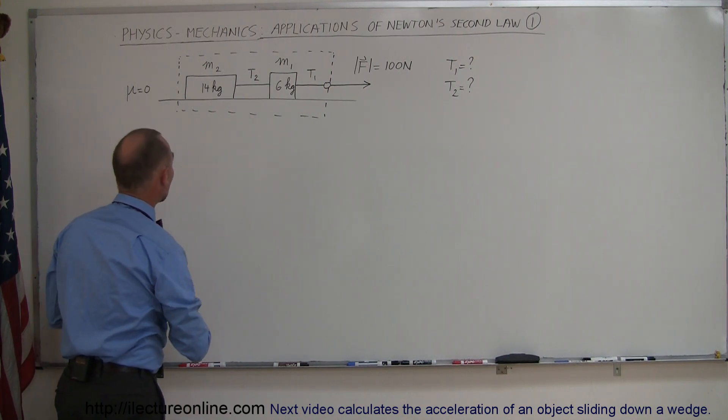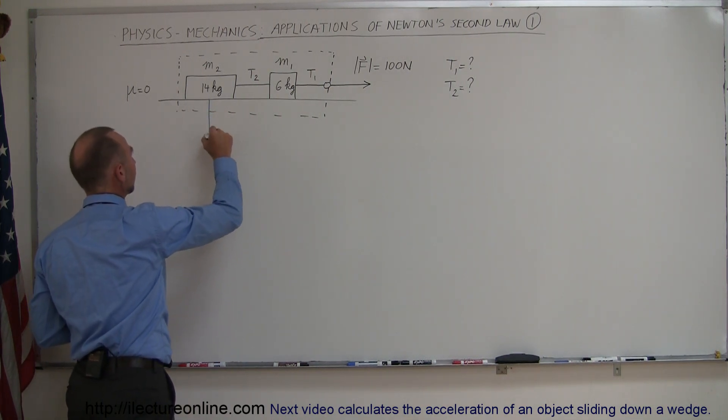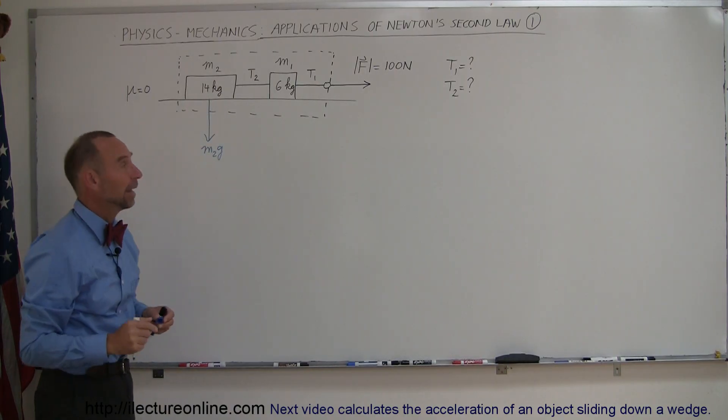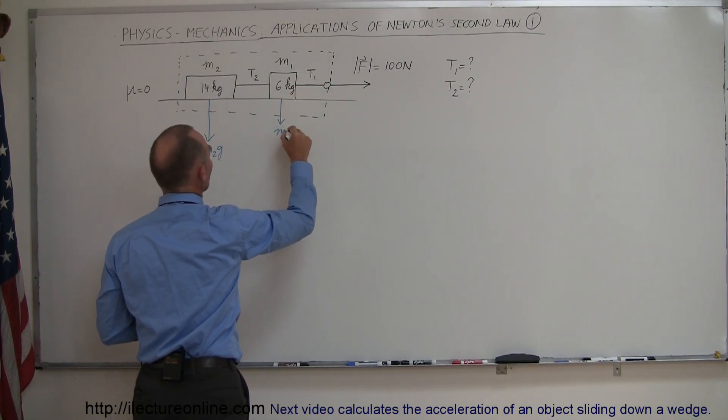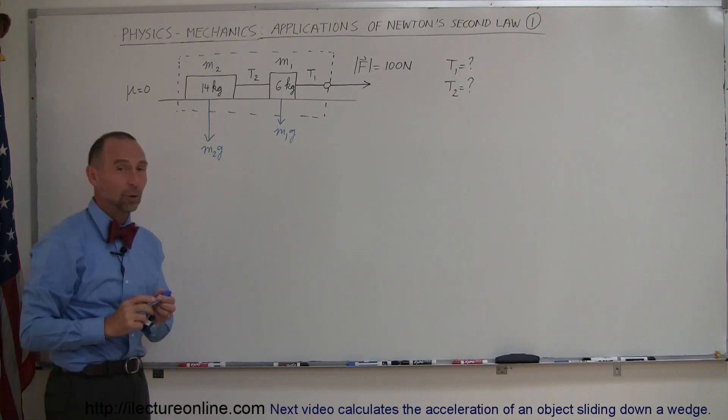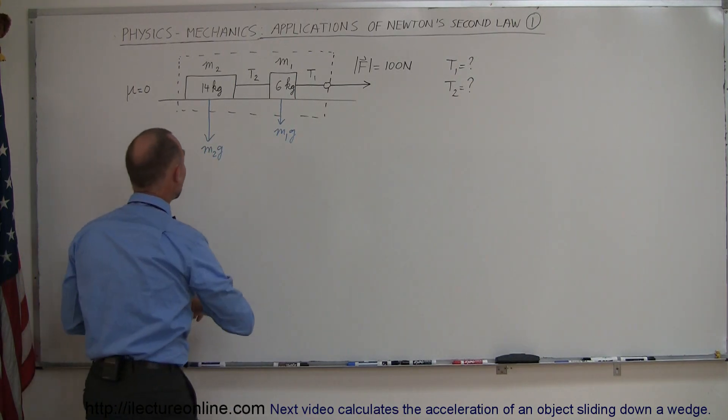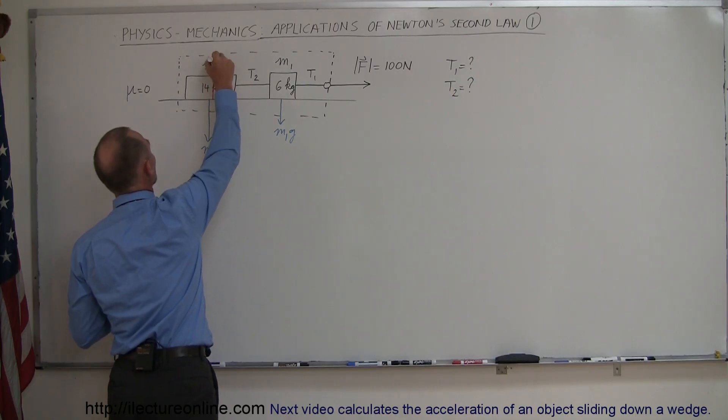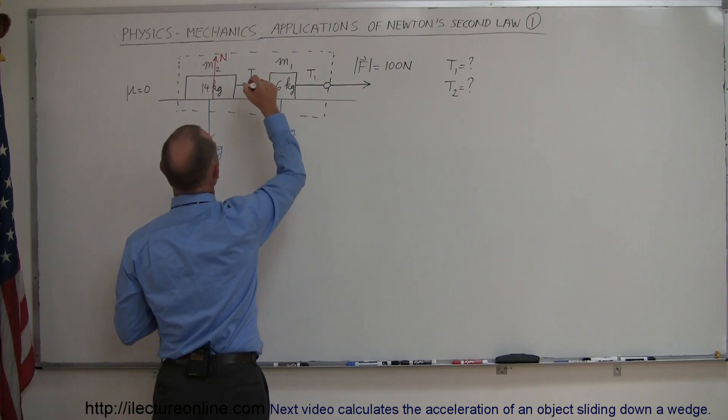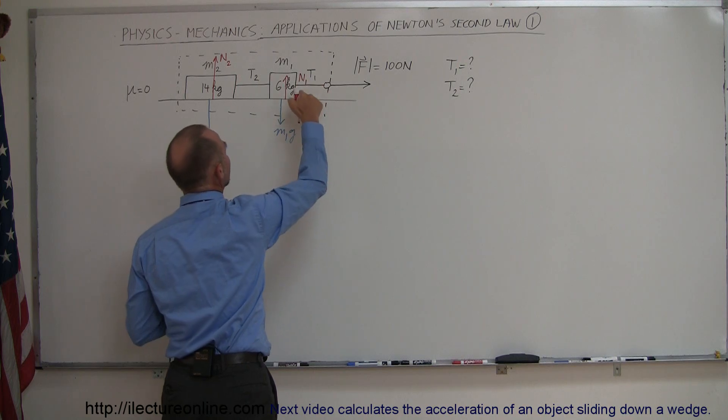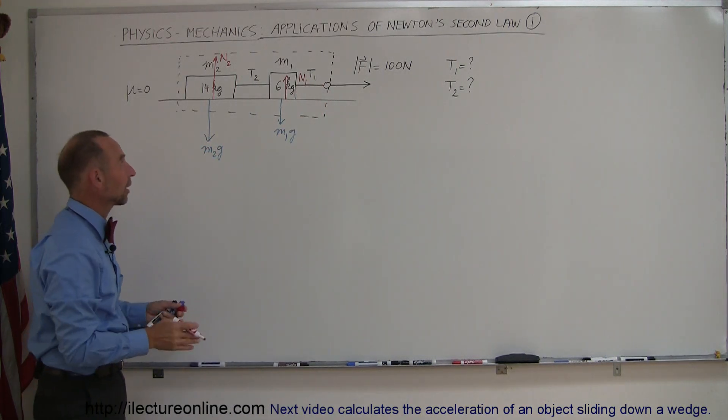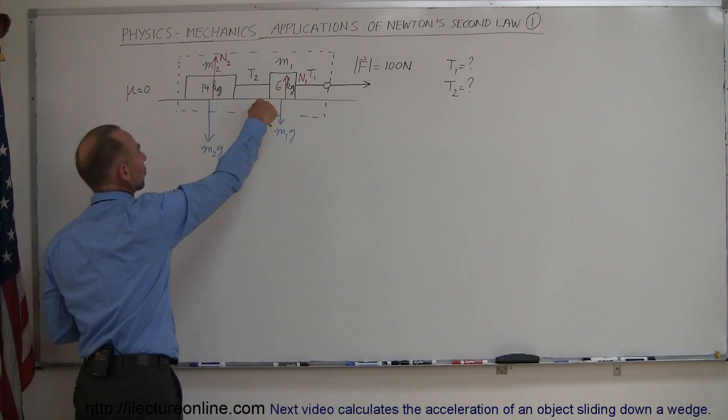First of all, we have gravity pulling down on this mass, so this would be M2g, which is the weight of the 14 kilogram mass, and then we have a force coming down this way, also due to gravity, which is M1g, which is the weight of this first mass right here. Knowing Newton's third law, we can see there's going to be a reactionary force, a normal force, which is going to be equal in magnitude of M2g. Here we're going to have a normal force, let's call it N1, which is going to be equal in magnitude to M1g and in opposite direction, so that these forces cancel each other out.